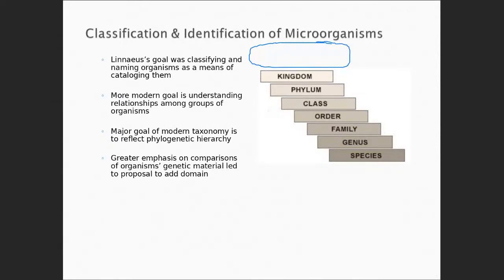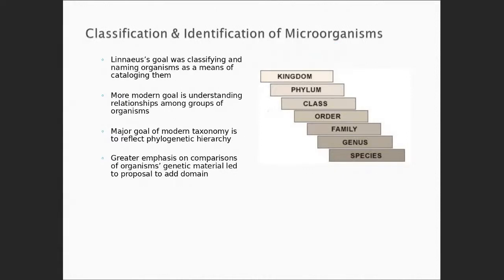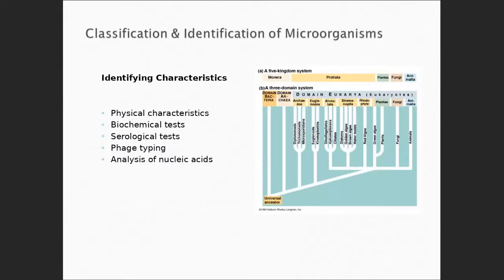That's right — a domain goes at the top. In the development of this hierarchy, we now have domains. Robert Whittaker said there are five kingdoms, really honing in on the eukaryotes. We started to get smarter, using physical characteristics, biochemical tests, serology, looking at what was in the blood, using viruses to help identify things, and then the analysis of nucleic acids, specifically DNA. We had DNA fingerprinting — it didn't become widely known until the O.J. Simpson trial, where people were running to look up what DNA was.